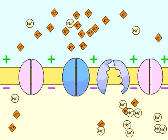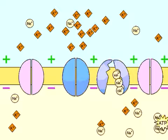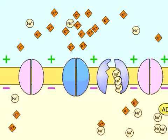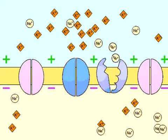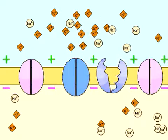Meanwhile, the sodium-potassium pump has been shuttling sodium ions out and potassium ions in, re-establishing the resting potential distribution of sodium and potassium ions.